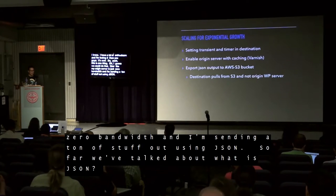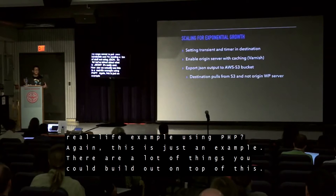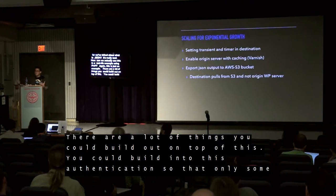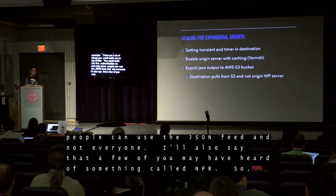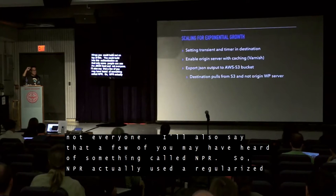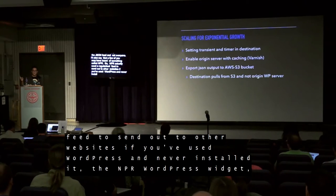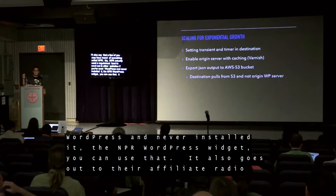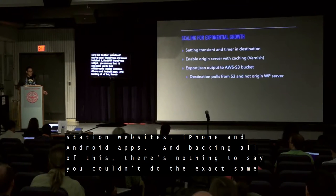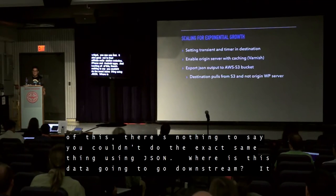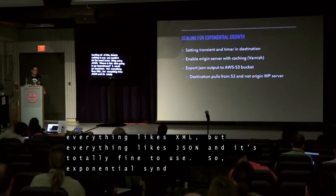So far we've talked about what JSON is — it's really cool — and how we can use it in a real life example using PHP. You could build authentication into this so that only some people can use the JSON feed. Also, NPR actually uses a regularized feed to send out to other websites. If you've used the NPR WordPress widget, it goes out to affiliate radio station websites, iPhone apps, Android apps. There's nothing to say you couldn't do the exact same thing using JSON, because where is this data going downstream? It could go anywhere. Not everything likes XML, but everything likes JSON.